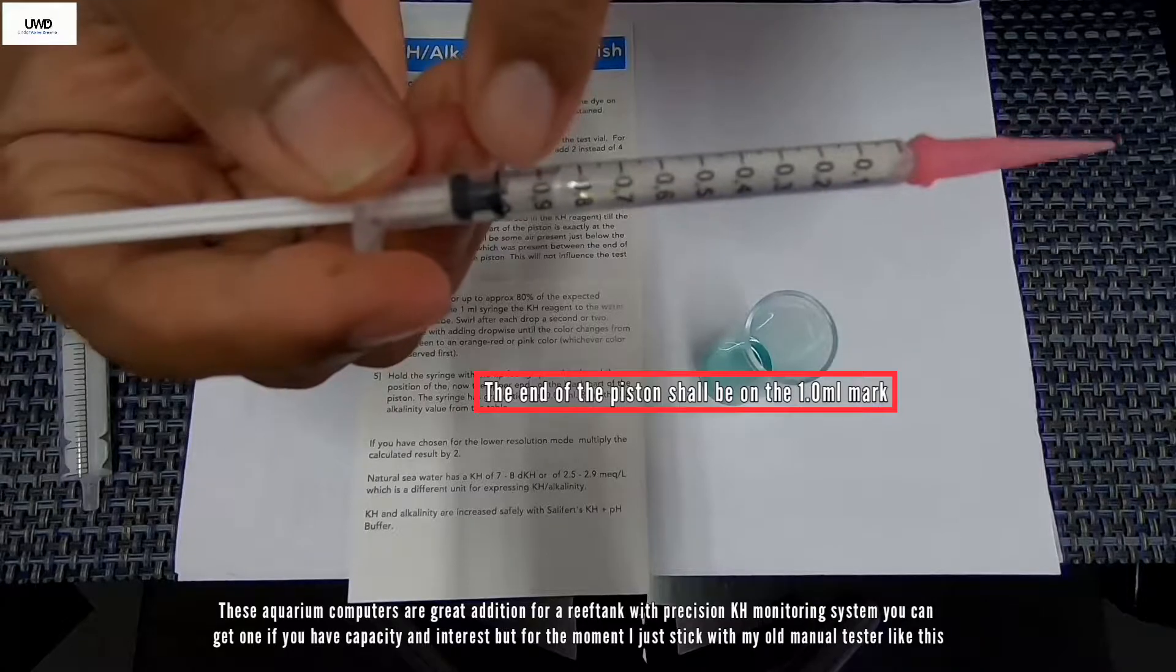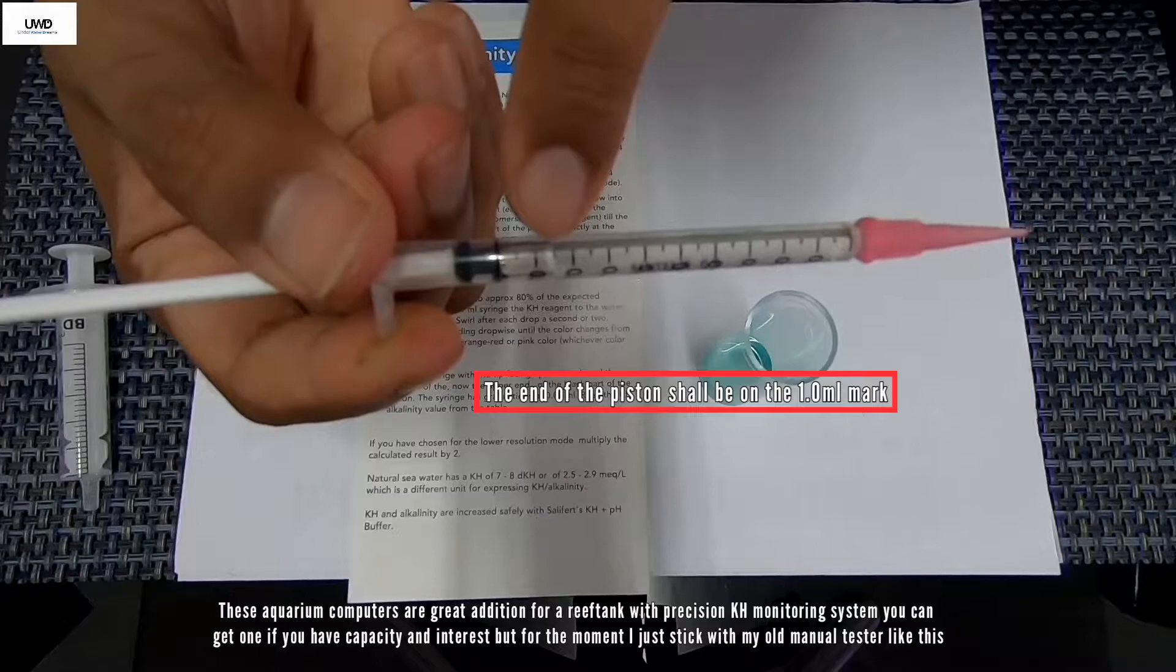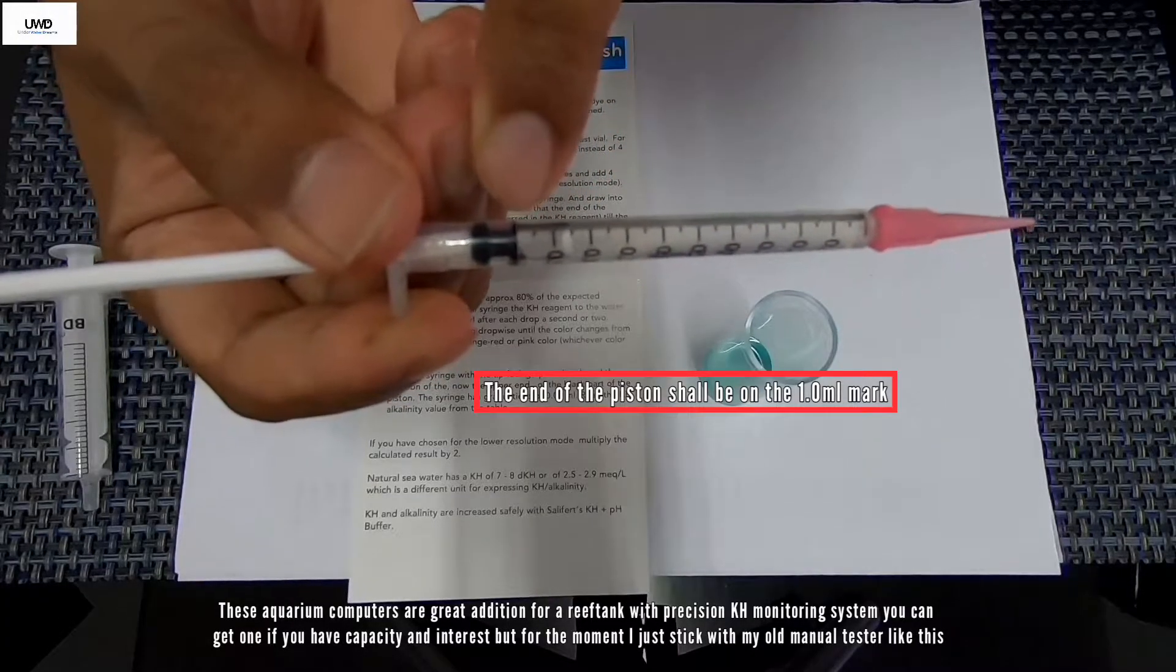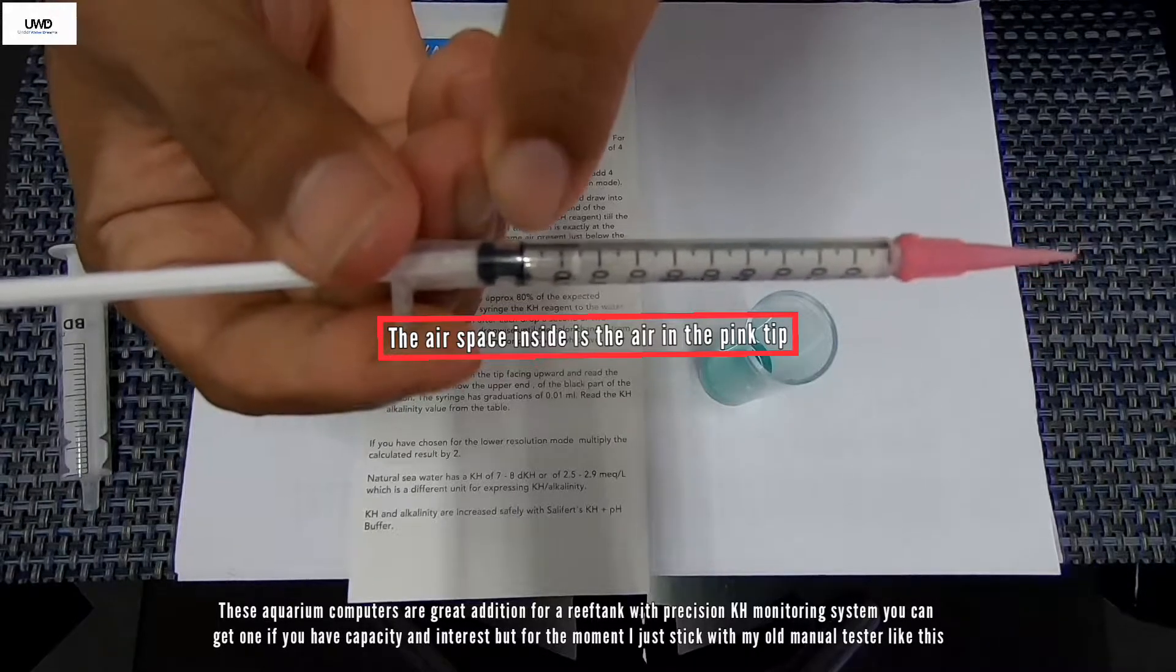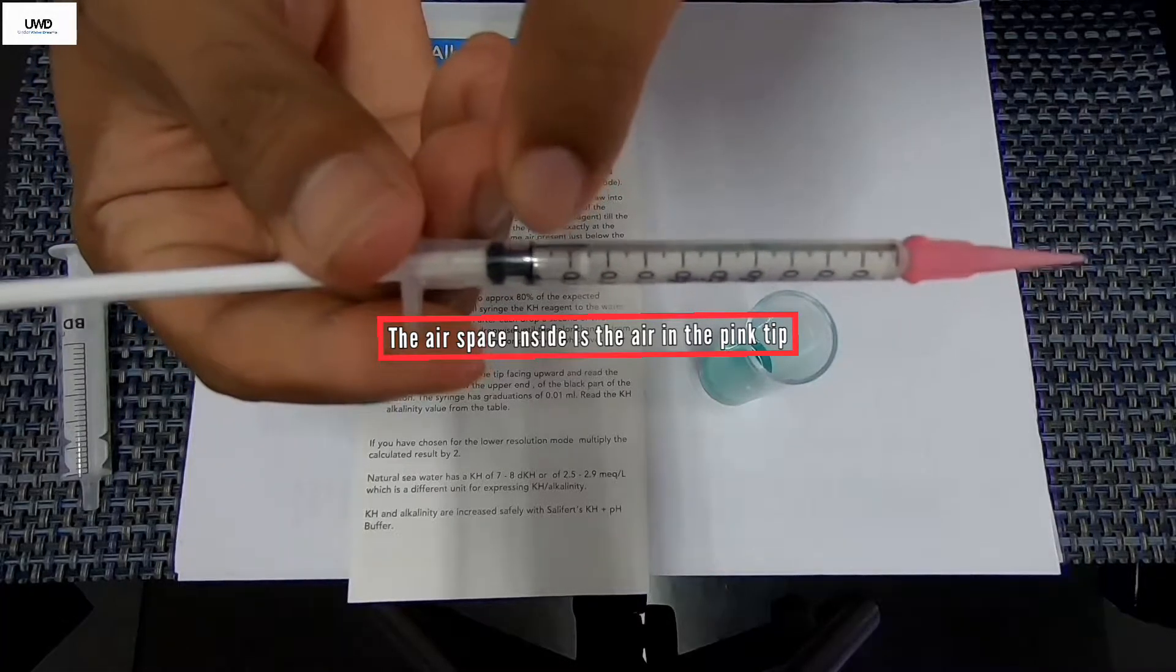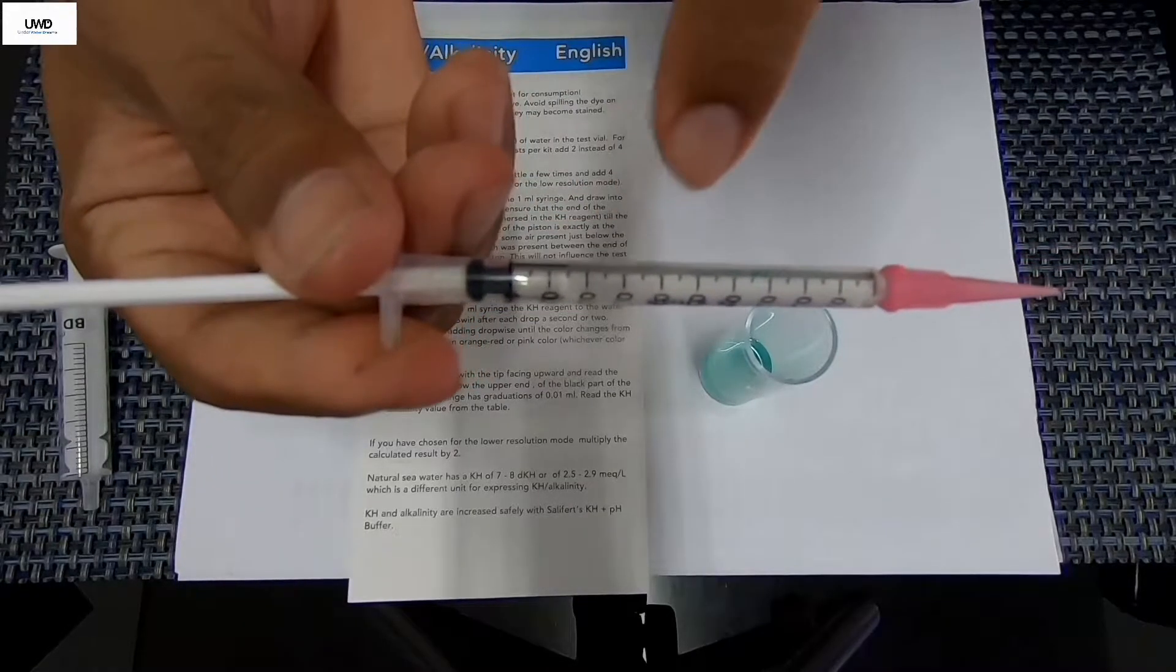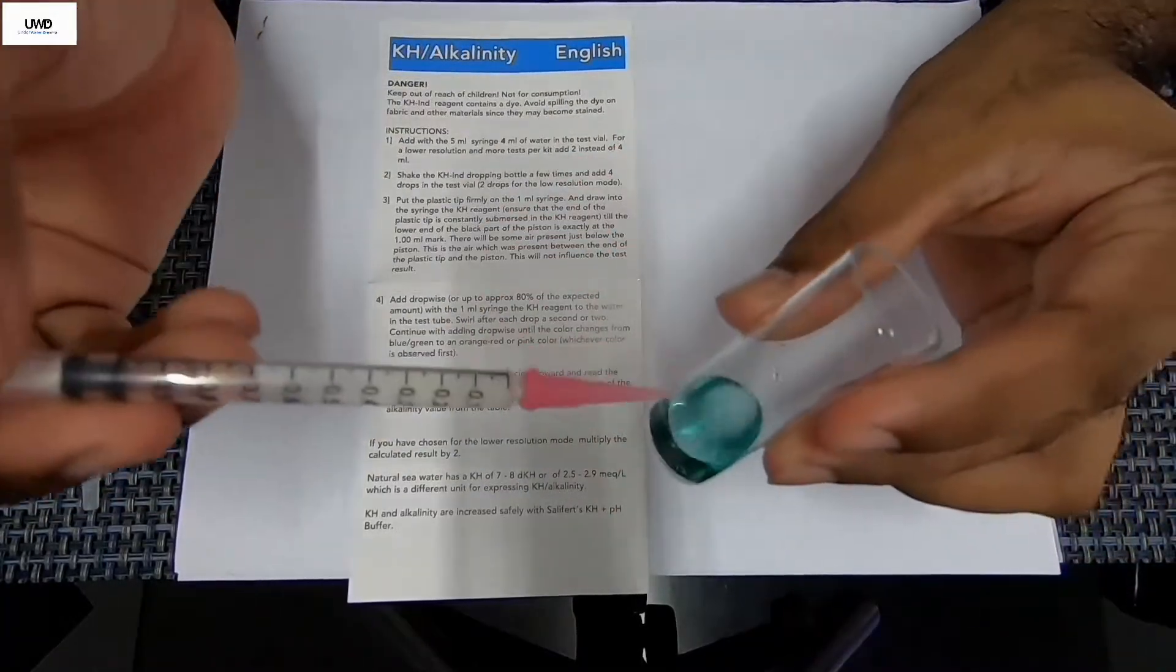Now you see there's reagent inside here. Make sure that you have actually drawn until 1ml, and there are going to be a bubble air space here until 8.5 mark. There's 9, 9.5, and 1.0. So what we're going to do is we're going to be reading from this plunger end. Not here and not here and not here, this is the end black plunger here.